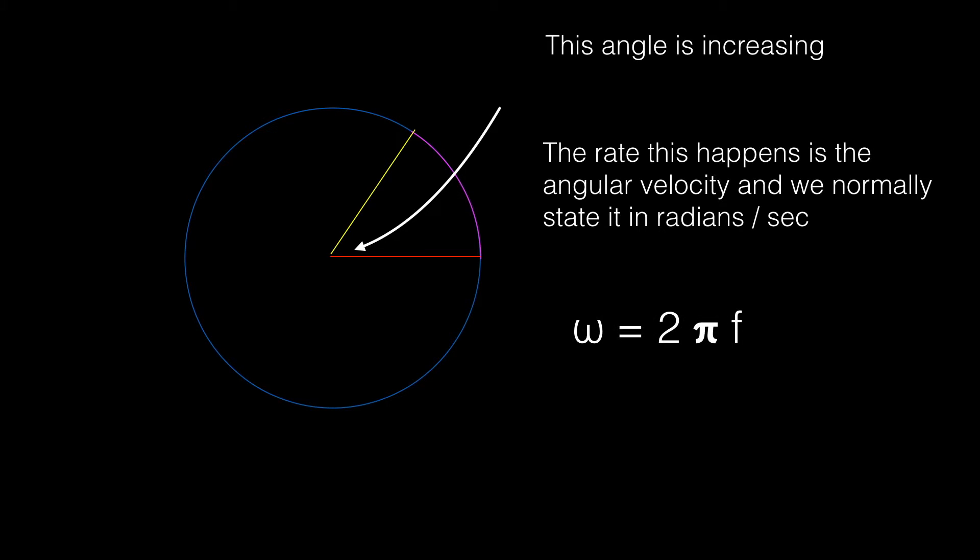The angular velocity then is omega, which is 2 pi f, because there are 2 pi radians in a complete circle times the rate at which it's going around, the frequency. So omega is 2 pi f. That's what allowed us to do that substitution at the beginning where we said the inductive reactance is 2 pi f L or we can call it omega L.